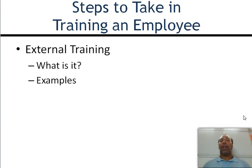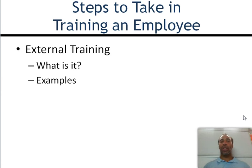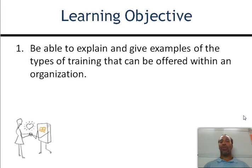External training is outside of the company — training that doesn't take place internally. Examples include manager seminars where you go, get some good tips, and learn a lot. Or you can send somebody out to get certified in something like Six Sigma — get your Six Sigma green belt, come back, and fix our processes. That's external training.